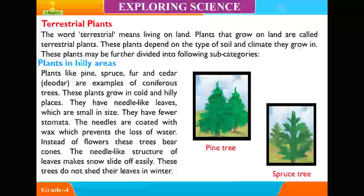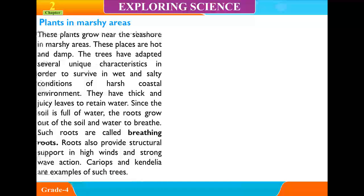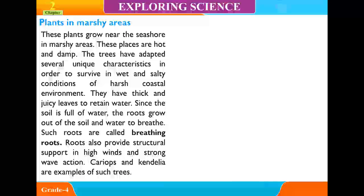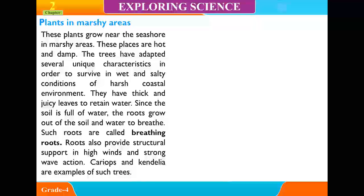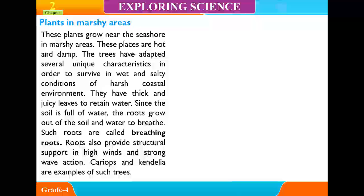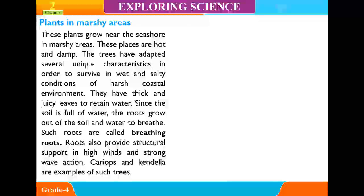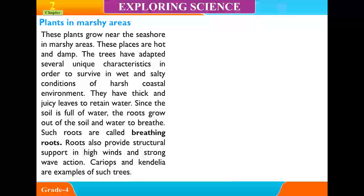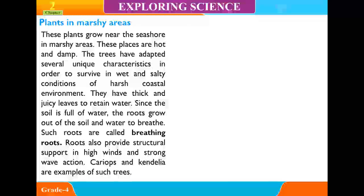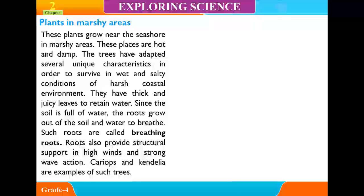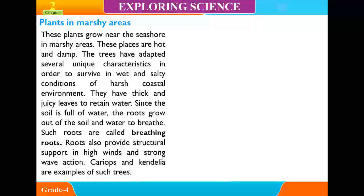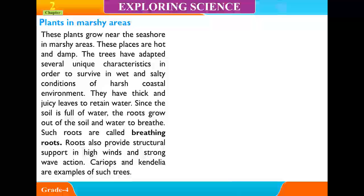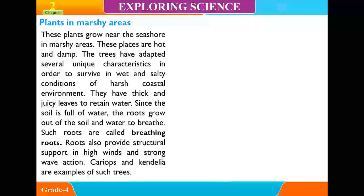Plants in Marshy Areas. These plants grow near the seashore in marshy areas. These places are hot and damp. The trees have adapted several unique characteristics in order to survive in wet and harsh coastal environments. They have thick and juicy leaves to retain water. Since the soil is full of water, the roots grow out of the soil and water to breathe. Such roots are called breathing roots. Roots also provide structural support in high winds and strong wave action.